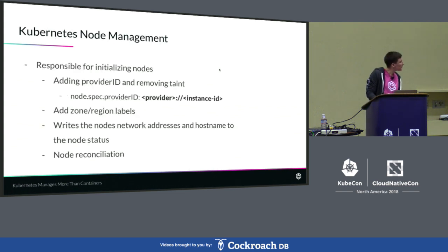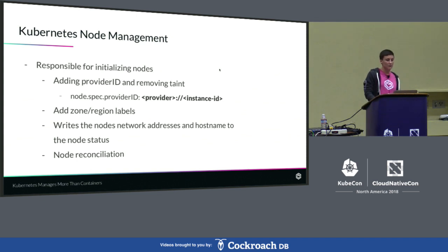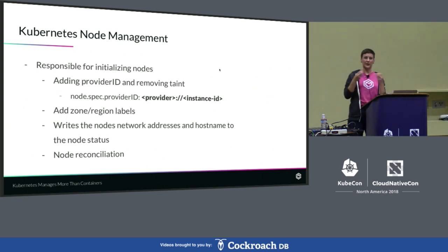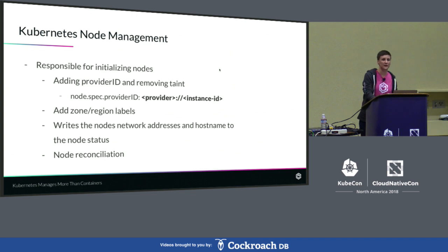Kubernetes node management is responsible for initializing your node — this is what registers that the taint is there, and then what to do from there. First, it's going to set a provider ID on it, which maps that Kubernetes node to the node that is in your provider, making those two things one. It also adds a zone and region label for identifying that node for management purposes, writing the node's network address and hostname to the status object so that you have all the information about your node through kubectl by just looking at your nodes. It also gives you node reconciliation, so when you do kubectl get nodes or look through the API, you know those nodes being returned to you actually exist.